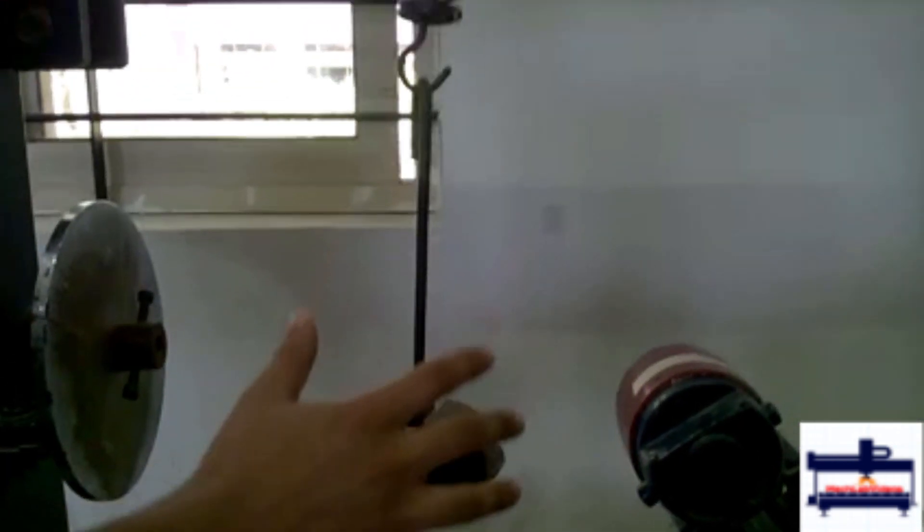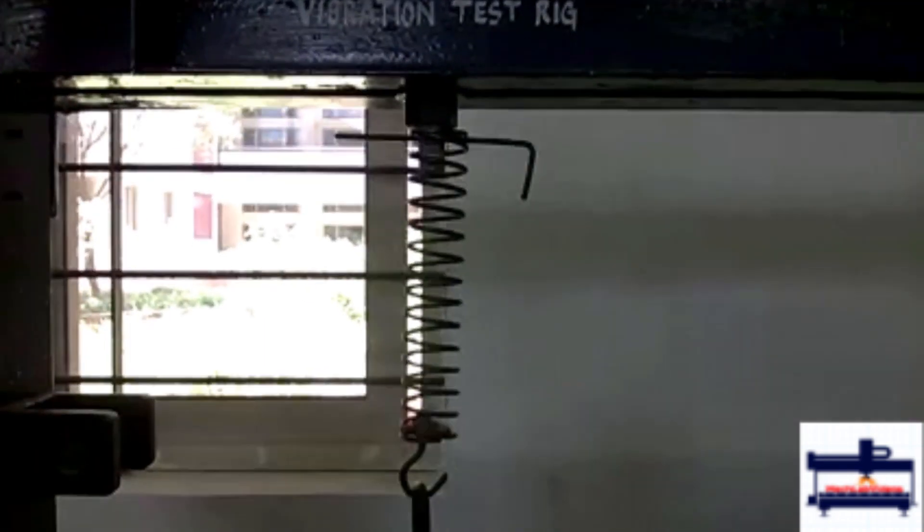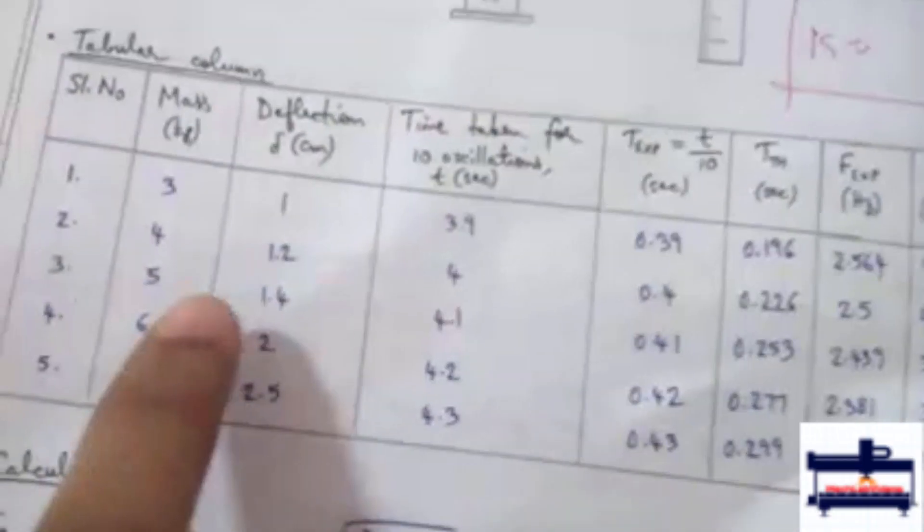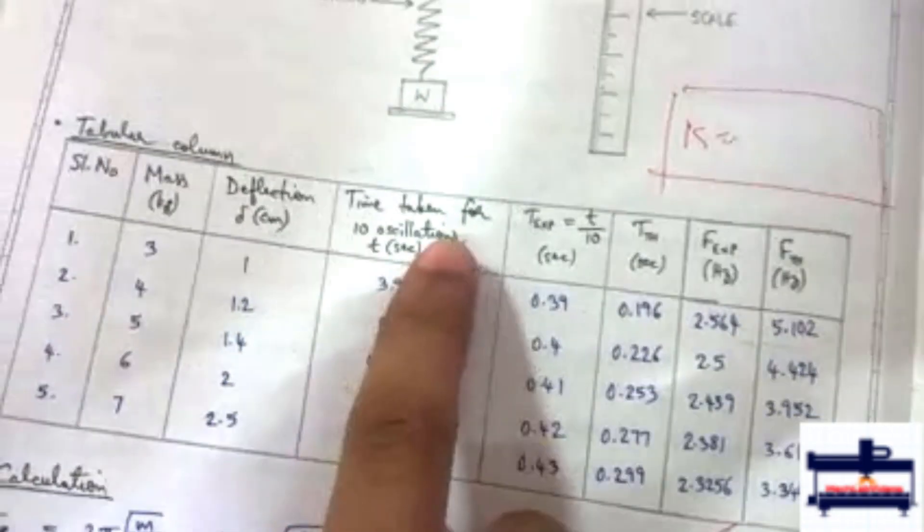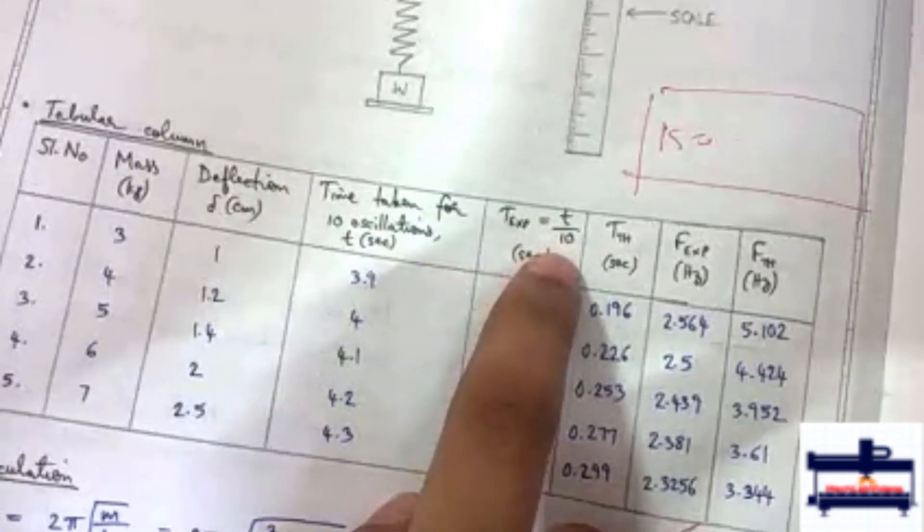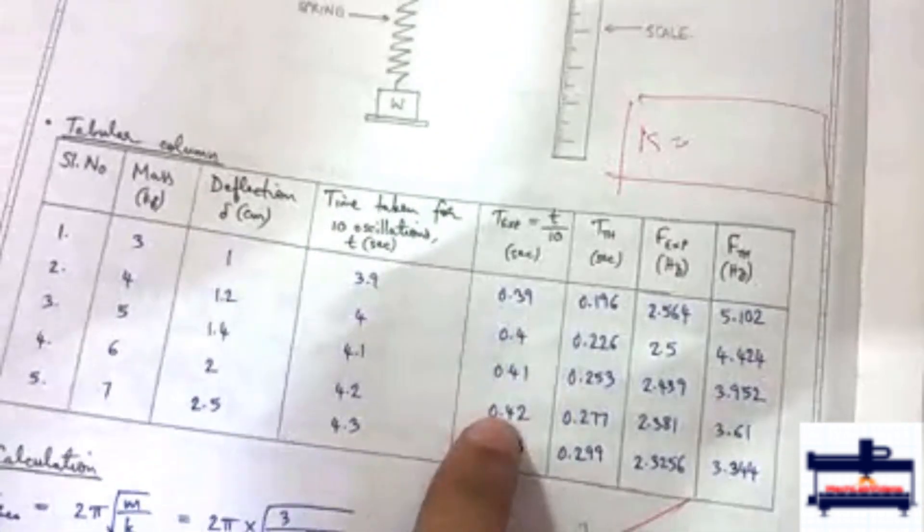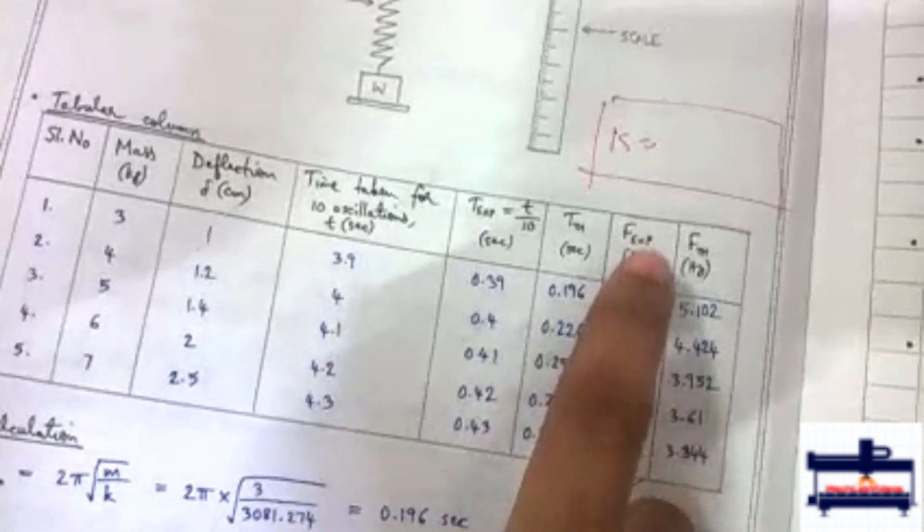After this, we pull the load down and release it, causing the spring to vibrate. Using a stopwatch, we calculate the time taken for 10 oscillations. The time taken for 10 oscillations divided by 10 gives us the experimental time period, and 1 by experimental time period gives us the experimental frequency of the spring.